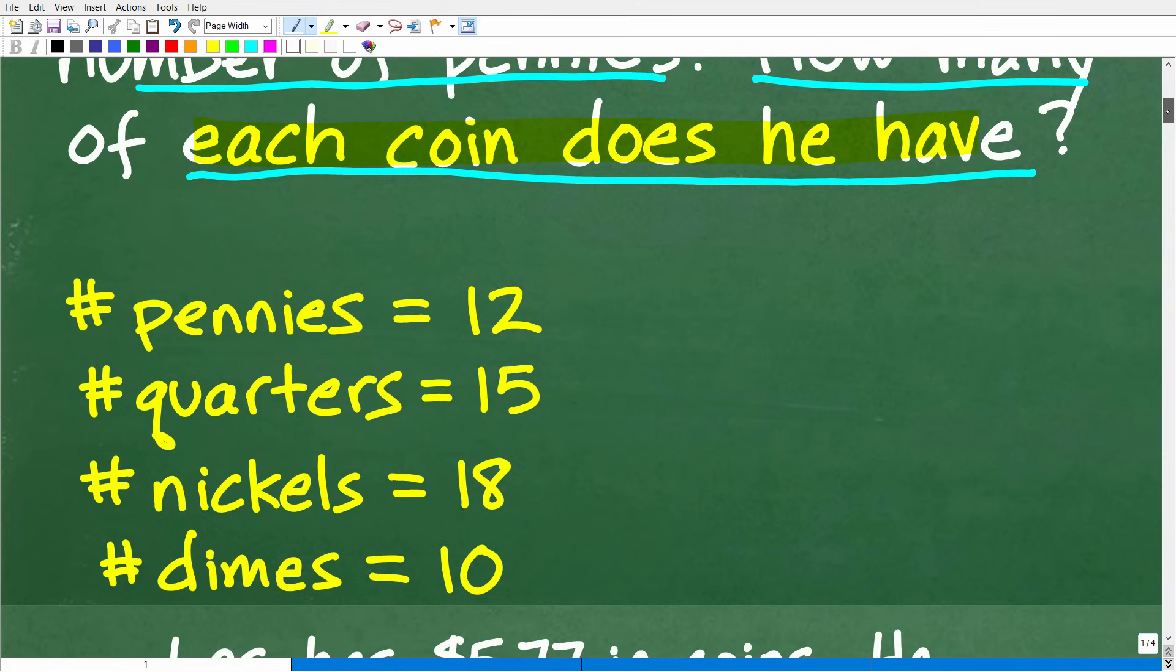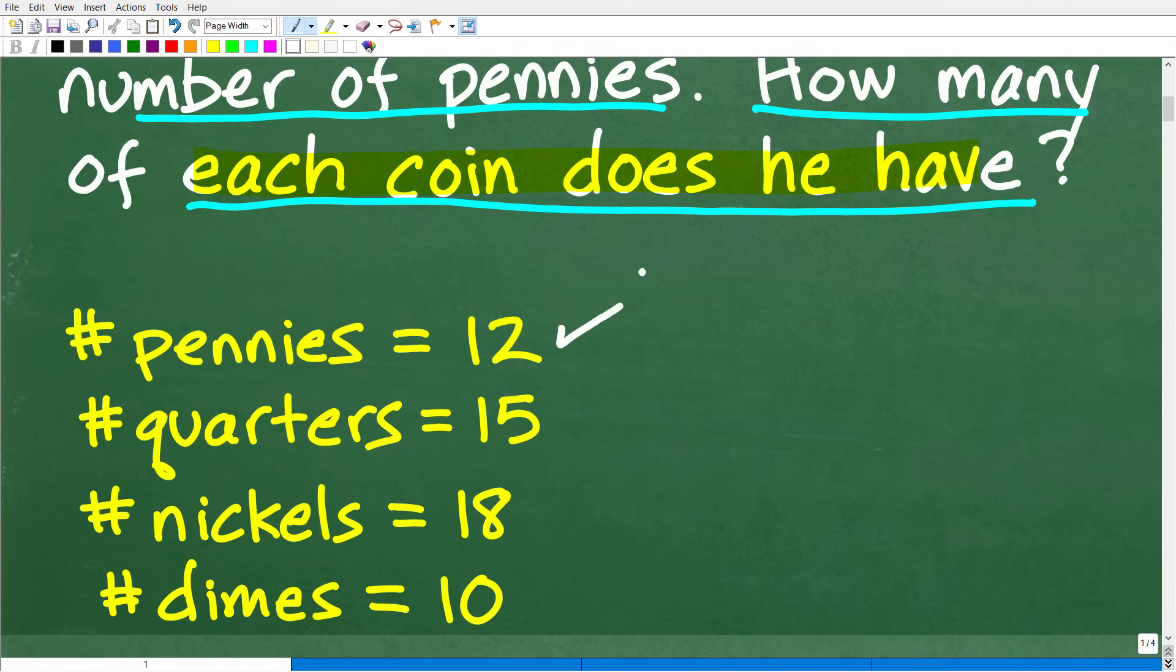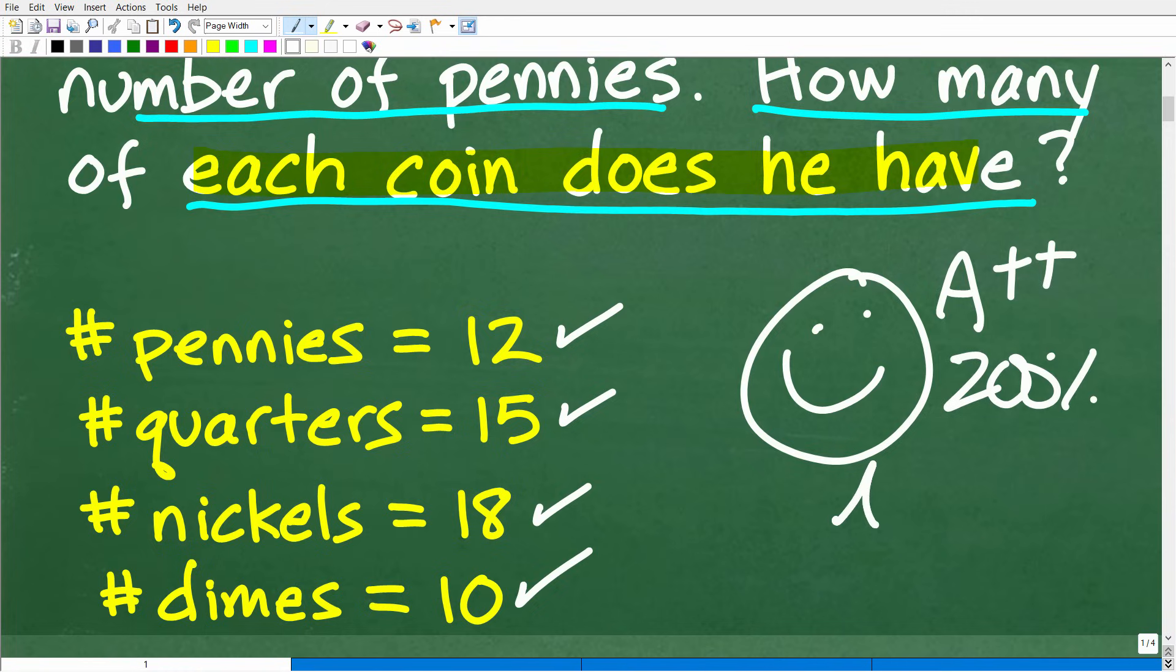So let's go ahead and see the actual answer. The correct answer is the following: So he has 12 pennies, 15 quarters, 18 nickels, and 10 dimes. Okay, now, if you figure this out, wow, that is fantastic. We have to celebrate by giving you a nice little happy face in A++. Matter of fact, I might give you like 200% multiple stars. Matter of fact, if you were in my math class, I would just say, take the rest of the year off. You certainly are an expert.